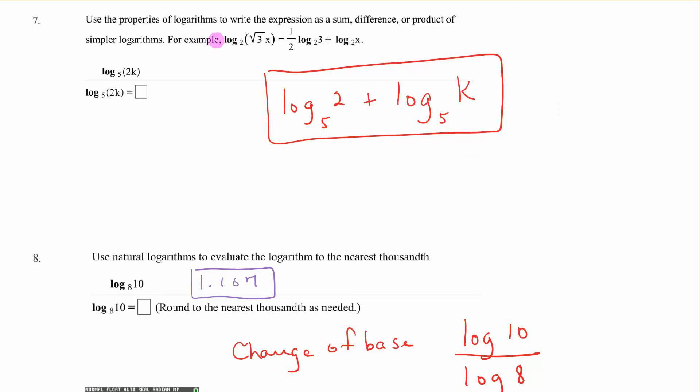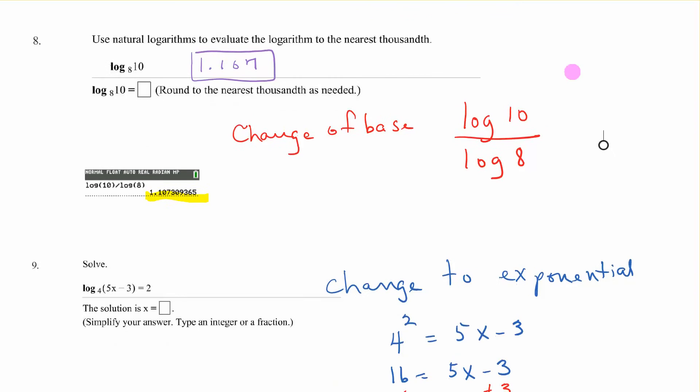Log base 5 of 2k. Remember this is a product. So if we're going to write this as a sum or difference, we're going to make this a sum because a product comes back to a sum if you're expanding. So this is log base 5 of 2 plus log base 5 of k. Use natural logs to evaluate the log to the nearest thousandth. Log base 8 of 10. We're going to use the change of base formula. Log of 10 over the log of 8. Do that on the calculator and you get this. It says round to the nearest thousandth. So that would be 1.107.